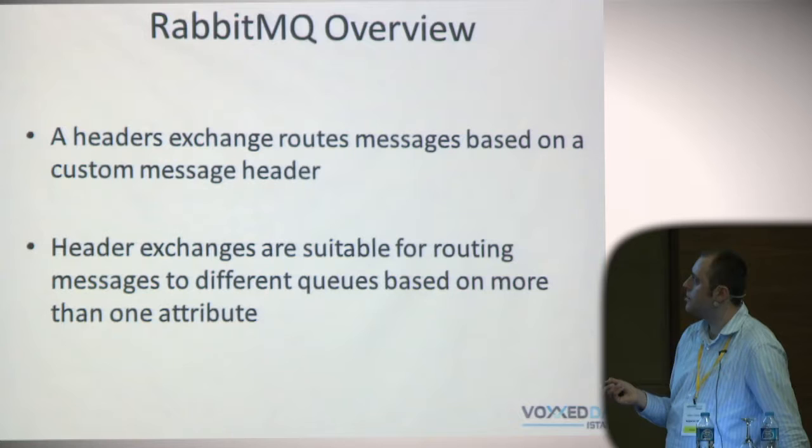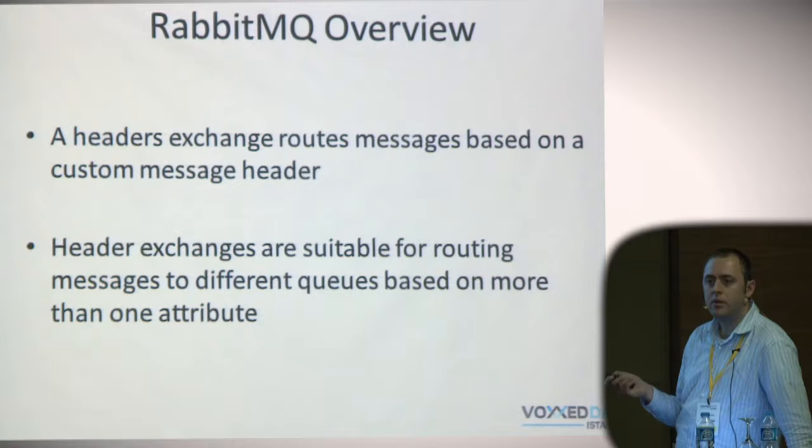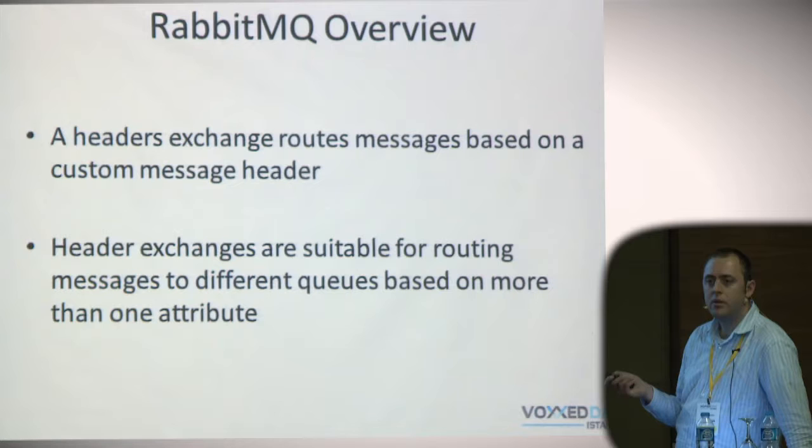The final type of exchanges are header exchanges, which work by specifying multiple binding keys rather than just one. They are useful in systems where you want to route messages not from only one attribute - the key - but from multiple attributes.